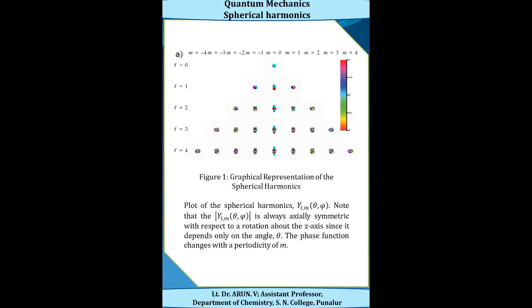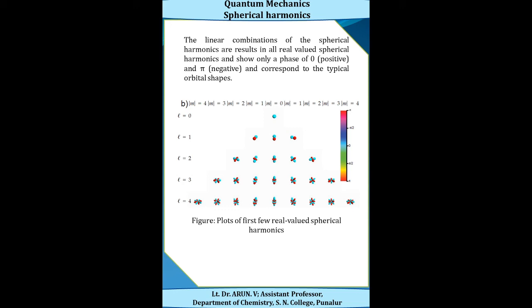This figure shows the graphical representation of spherical harmonics — the plot of Y_l^m. Note that |Y_l^m(θ,φ)| is axially symmetric with respect to rotation about the z-axis, since it depends only on angle θ. The phase function changes with a periodicity of m. Taking the linear combination of spherical harmonics results in real-valued spherical harmonics with phase values 0 for positive and π for negative, corresponding to typical orbital shapes: l = 0 is s orbital, l = 1 is p orbital, l = 2 is d orbital, and l = 3 is f orbital.